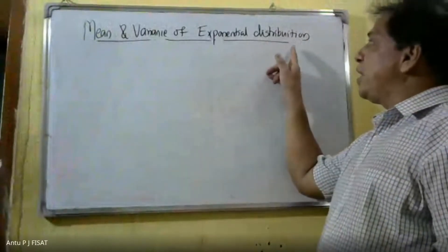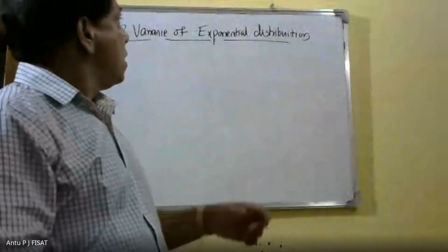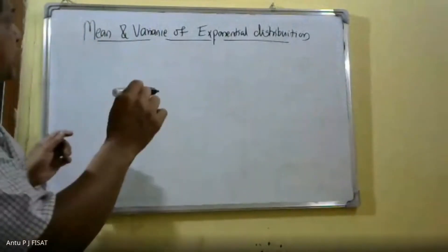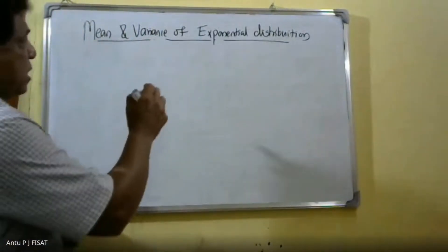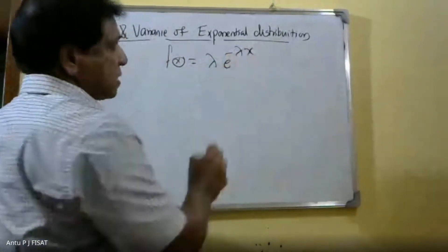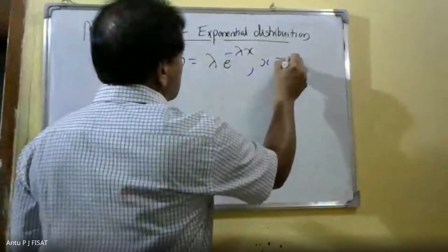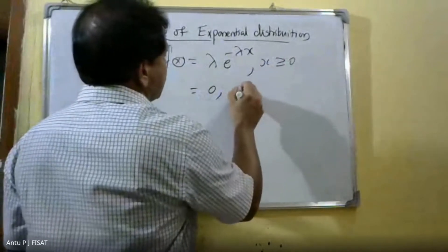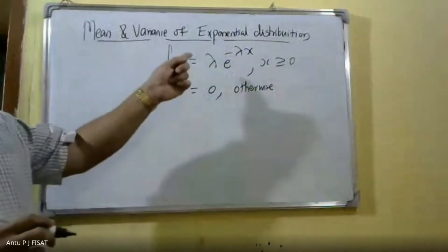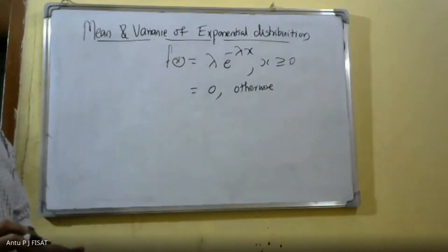We will find the mean and variance of an exponential distribution. The probability density function of the exponential distribution is f(x) = λ·e^(−λx), where x ≥ 0, and 0 otherwise.